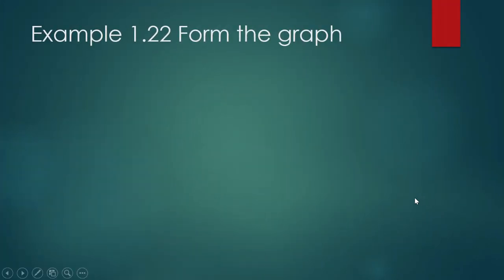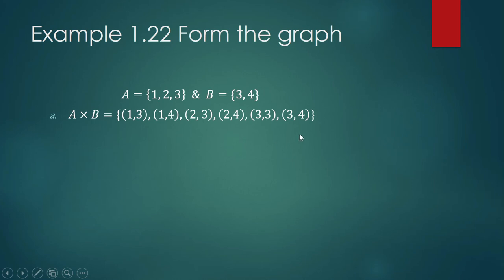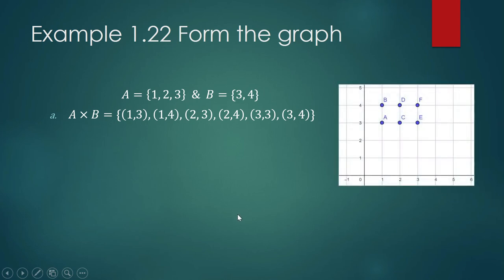Example 1.22: Form the graph. We have A = {1,2,3} and B = {3,4}. Let us form A cross B. You will list down all pairings where the first coordinate comes from A and the second comes from set B. So it's going to be (1,3), (1,4), (2,3), (2,4), (3,3), (3,4). We can plot these elements in your plane, and this is how they will appear.